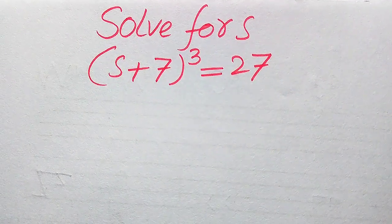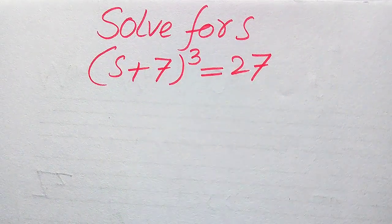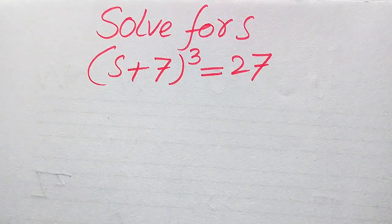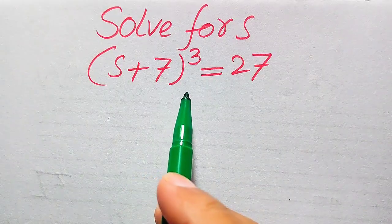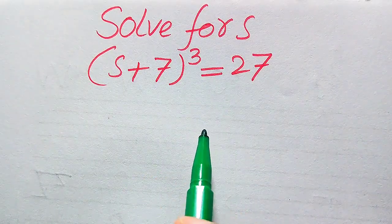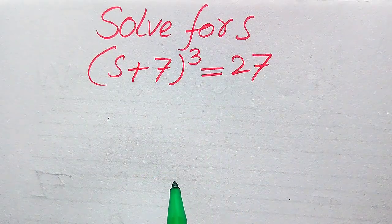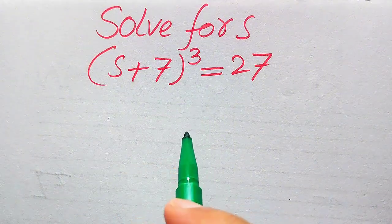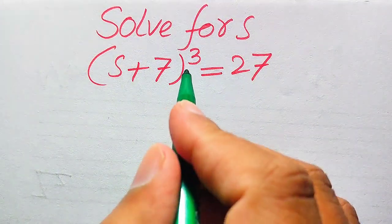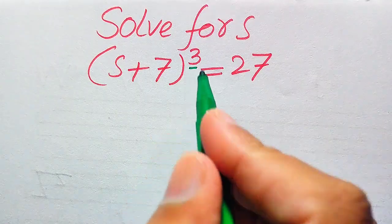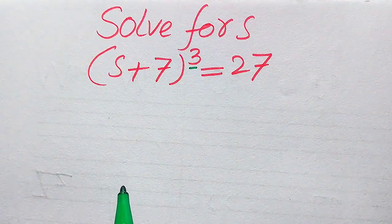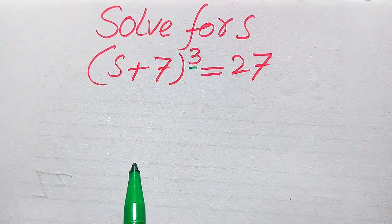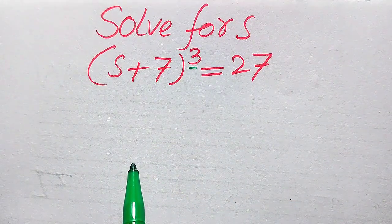Hello everyone. How to solve this problem for the values of s: if we have (s + 7) cubed equals 27, and we solve for all the values of s. This equation is a cubic equation because its highest exponent is 3, so it has three roots and we need to find all three roots.